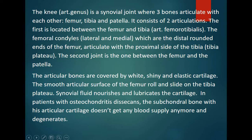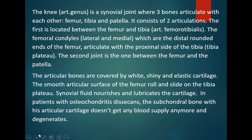The knee is a synovial joint with the tibia and femur, and the femur and patella as the two main joints, where the patella sits on the trochlear groove of the femur. The articular bones are covered by white shiny elastic cartilage which rolls and slides on the tibial plateau. The synovial fluid acts as a nourishing substance and lubricates the cartilage, lessening friction. In patients with osteochondritis dissecans, the subchondral bone with articular cartilage doesn't get blood supply and starts to degenerate.